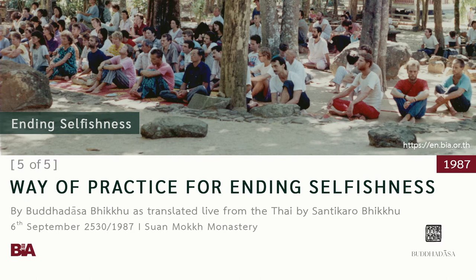In each of these levels of attainment, the essential thing is that they all arise out of seeing impermanence, unsatisfactoriness, and not-self to that degree. These attainments progress as the realization of anicca, dukkha, and anatta — impermanence, unsatisfactoriness, and not-self — progresses.